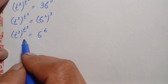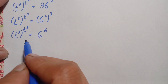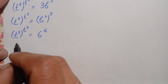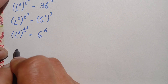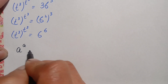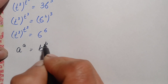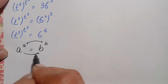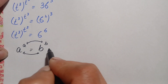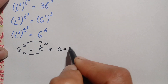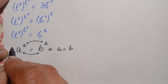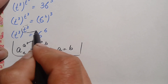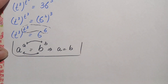We will use the same-base same-power exponential identity. When we have numbers in the form l raised to power a equal to b raised to power b, we can compare the bases as well as the powers. So from here we can write the powers as equal: a equals b. Using this result, we compare the powers and the value of t cubed will be 6.